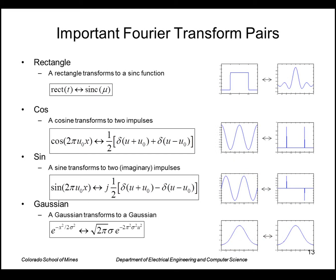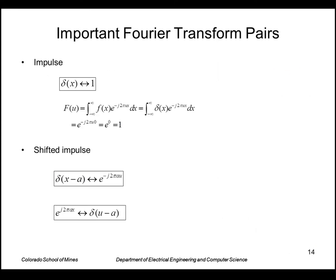So this is symmetrical. Either of these can be the spatial function and the other can be the frequency. So you can go either way. An impulse transforms to a constant. You can see that just by plugging in the impulse into the Fourier transform definition. As well as a shifted impulse transforms into a complex number.